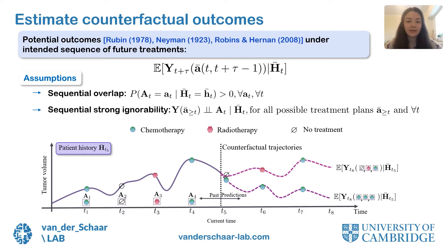In this example, say we have observed how the tumor volume of the patient has changed in the past according to the treatments given at time steps T1 to T4. Now assume we are at time step T5, and we want to decide on a treatment plan for the next three time steps that would result in the lowest tumor volume at the end. To do this, we can build causal inference methods that estimate these potential outcomes for the patient under different treatment plans, conditioned on the observed history.